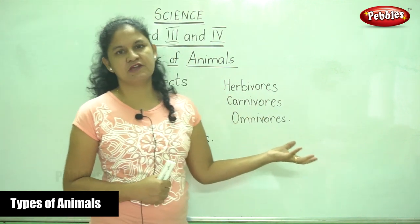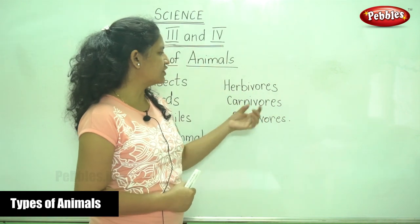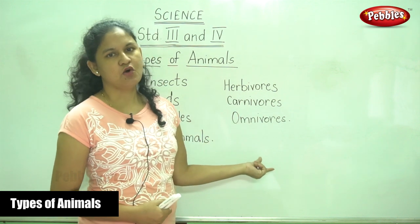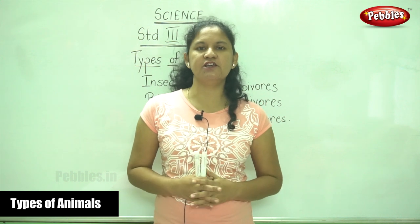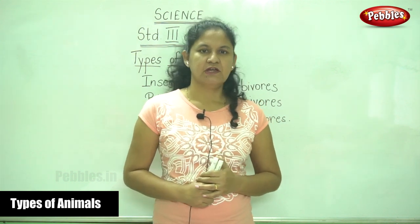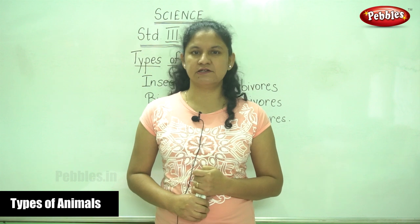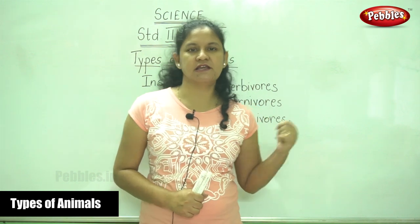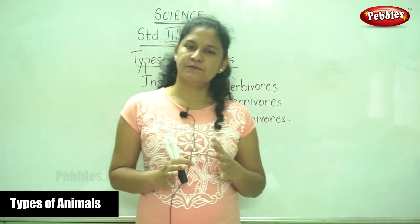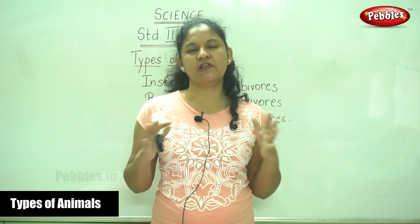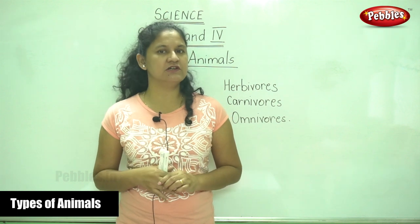Animals can also be classified according to their food intake. They are classified into herbivores, carnivores, and omnivores. Herbivores are animals that depend entirely on plants for food. Carnivores are animals that eat the flesh of other animals. Omnivores depend both on plants as well as animals for their food and hence are termed omnivores — they have no particular choice.